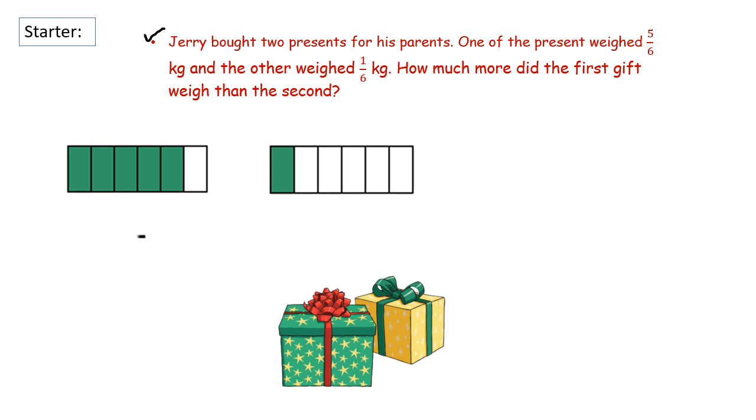We have here 5/6 and 1/6. We can see that the denominators are same. So we are going to subtract the numerators. 5 minus 1 is going to be 4 and the denominator will be the same. So we have 4/6. The first gift weighed 4/6 more than the second gift.